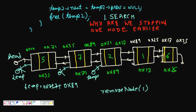A valid question is: why are we stopping one element before, one node earlier? Because if we come to the node itself, we need to manipulate connections between one node before it and one node after it to remove it. That's why we stopped one node earlier.